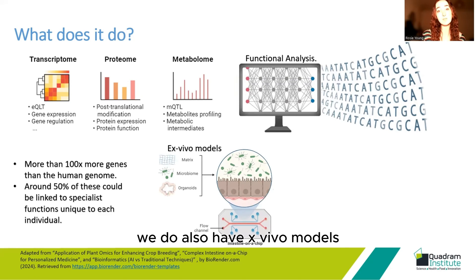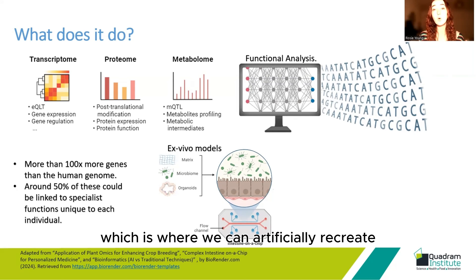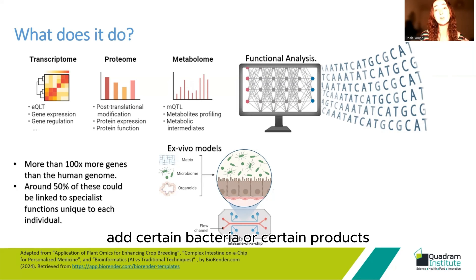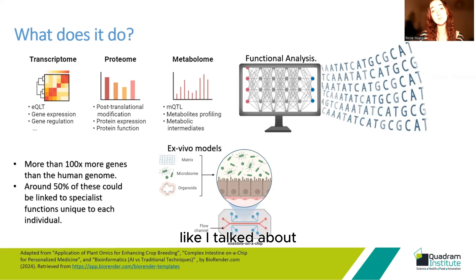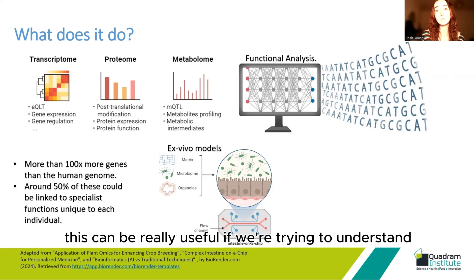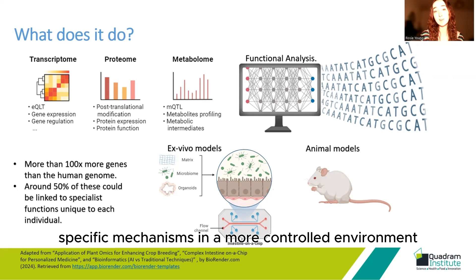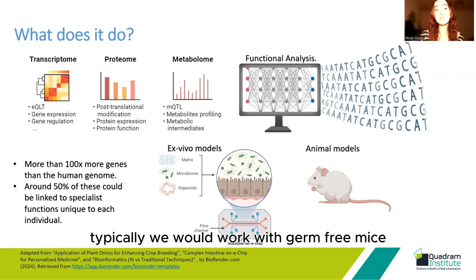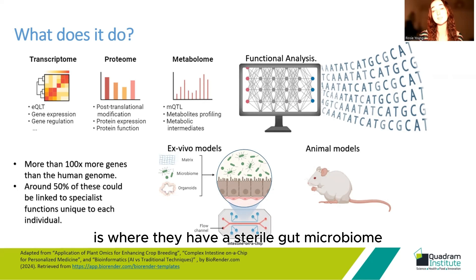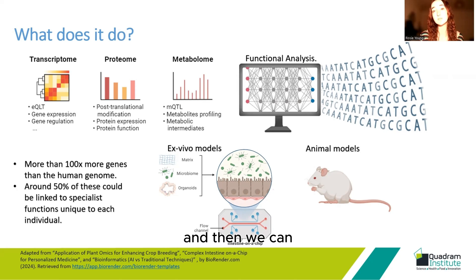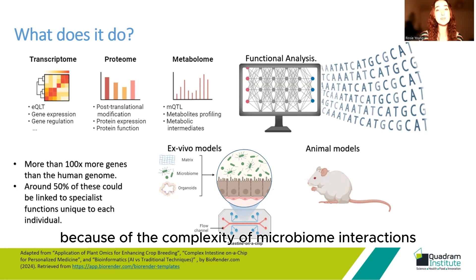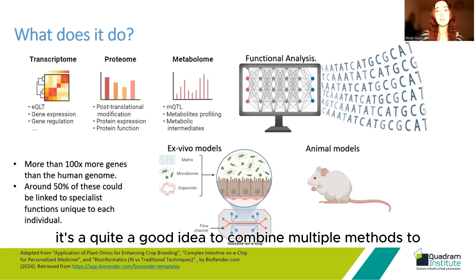We also have ex vivo models — things like organ-on-a-chip, where we can artificially recreate a gut microbe or blood interface and understand what happens when we add certain bacteria or certain products to that environment. Because the gut microbiome is impacted by so many variables, this can be really useful if we're trying to understand specific mechanisms in a more controlled environment. We also have animal models — typically germ-free mice, which have a sterile gut microbiome with no bacteria — where we can add the types of compositions we want and measure outcomes on health. Because of the complexity of microbiome interactions, it's quite a good idea to combine multiple methods to get as comprehensive a view as possible.